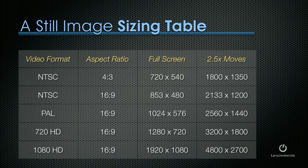If you want an image to fill the frame, you need to make special note of this table. If you're working at NTSC 4x3, create your image inside Photoshop so it's 720 by 540. Why 540 and not 480? Because the computer works with square pixels and NTSC works with rectangular pixels. This full-screen size compensates for the difference in pixel aspect ratio. For a 16 by 9 NTSC image, create your image at 853 by 480 — this will perfectly fill the frame.